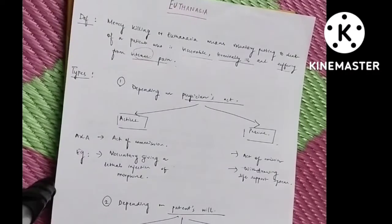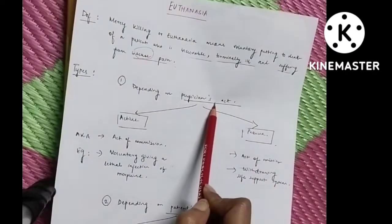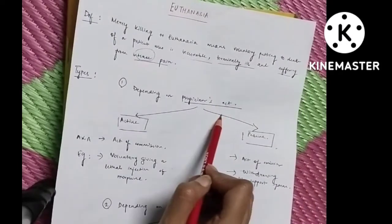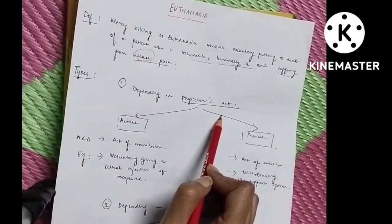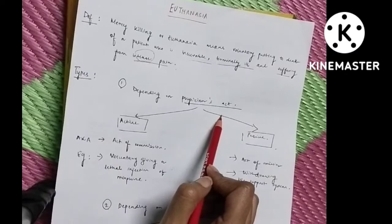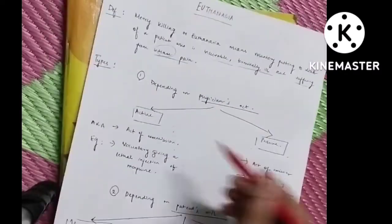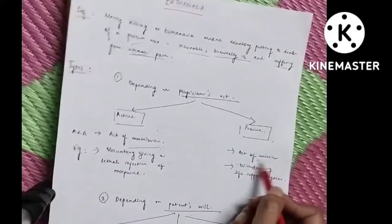There are two types of euthanasia: one on the basis of physician's act and second on the basis of patient's will. Now on the basis of physician's act, that means the doctor or the physician is himself conducting the process of euthanasia. This can be active, this can be passive. Active means act of commission and passive means act of omission.